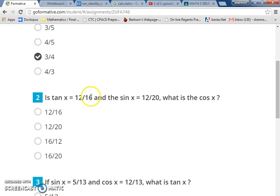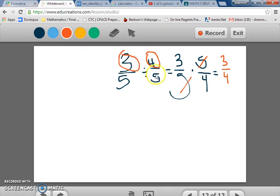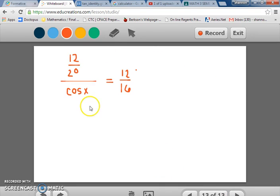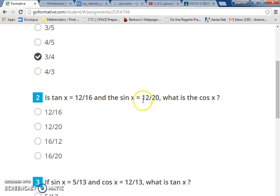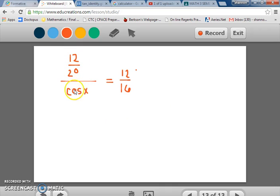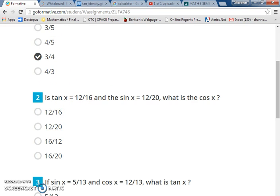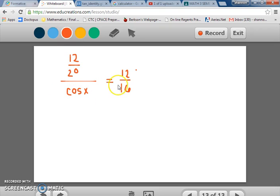So essentially it should be 12 over 20 and this should be 12 over 16, so that means the cosine should have been 16 over 20. I know that went a little fast. Let's take a look at it. We need the sine, which was 12 over 20, over the cosine, which we don't know, and it's got to be equal to the tangent, which we said was 12 over 16. So sine over cosine equals tangent. I've got to get cosine by itself so that I can solve for it. So I would get it out of the denominator by multiplying it by both sides.